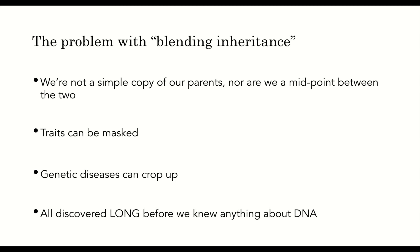Interestingly, Darwin and his contemporaries were aware of the flaws in this theory. They observed that we're not a simple copy of our parents, nor are we a midpoint between the two. Traits can be masked, and genetic diseases can crop up. All of these points were discovered and observed long before humans knew anything about DNA.